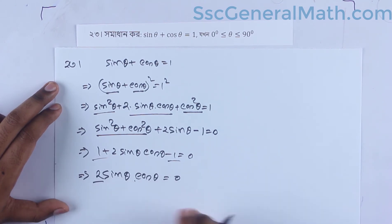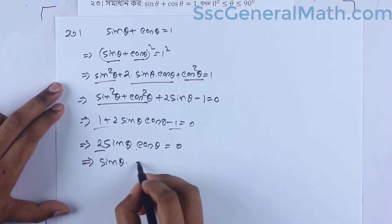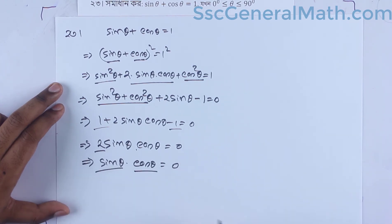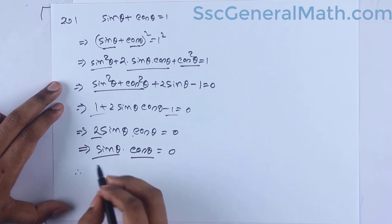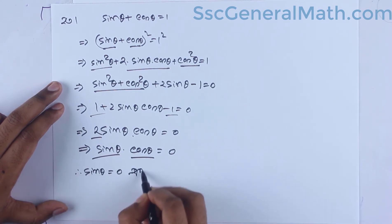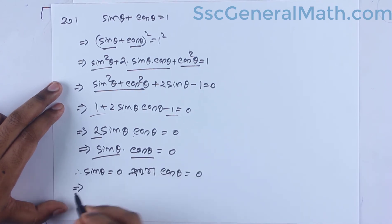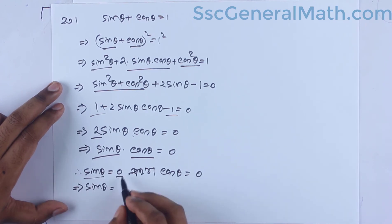One solution is final and the other one is equal to zero. So sin theta equals 0, which gives theta equals 0.